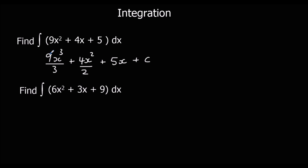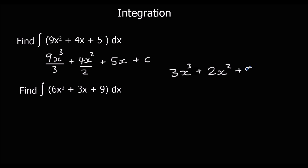We can simplify these: 9 divided by 3 is 3, so we've got 3x³. 4 divided by 2 is 2, plus 2x², plus 5x, plus c. That's the answer.